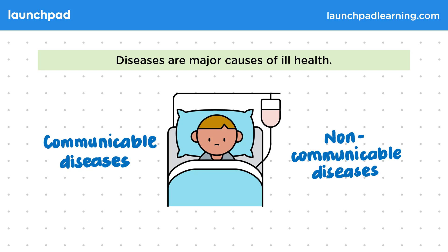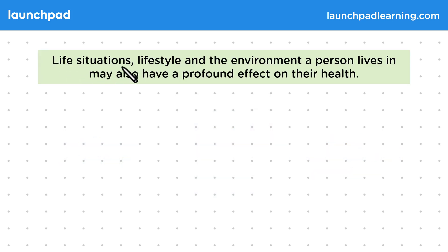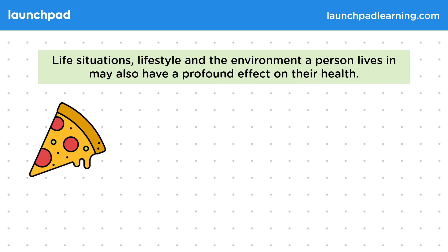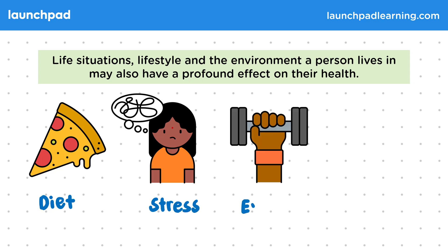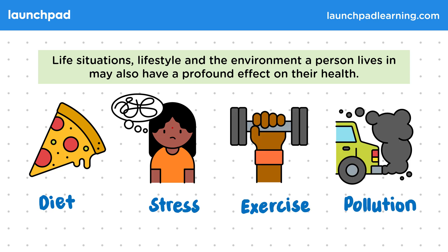Can you think of anything else that can cause ill health? Life situations, lifestyle, and the environment a person lives in may also have a profound effect on their health. For example, your diet, any stress that you experience, exercise, and also pollution can all cause ill health.